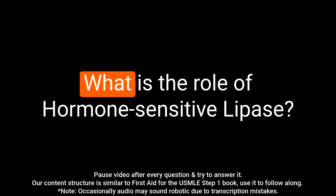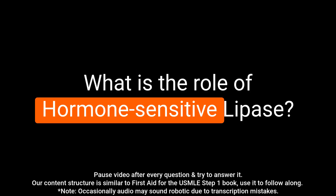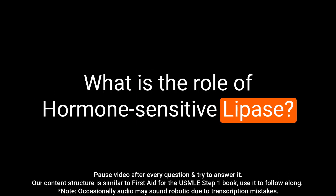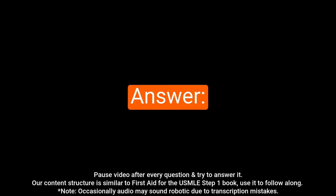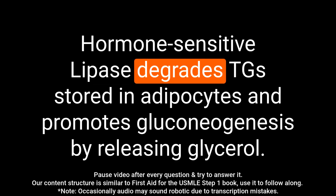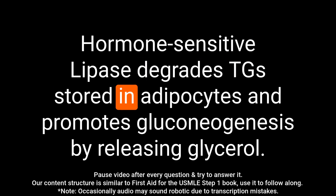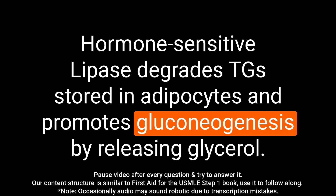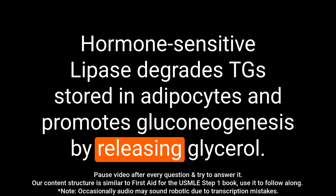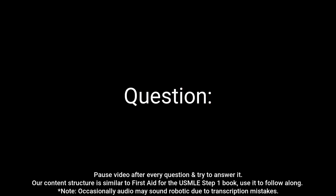Question: What is the role of hormone-sensitive lipase? Answer: Hormone-sensitive lipase degrades TGs stored in adipocytes and promotes gluconeogenesis by releasing glycerol.